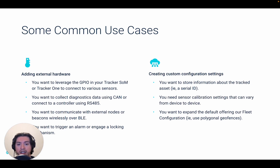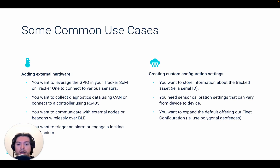The second category is customizing the fleet settings. You may want to send asset-specific data to your Tracker, such as a registration ID or a calibration value for a sensor that varies from place to place. Or you might simply want to expand the default capabilities of our configuration, like creating polygonal geofences instead of circular ones. Any of these examples will require some form of customization, whether it be hardware, firmware, software, or a combination of these.